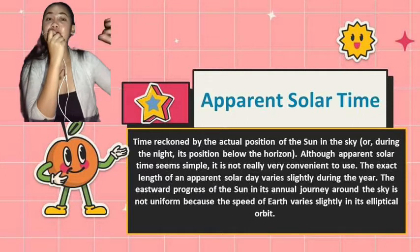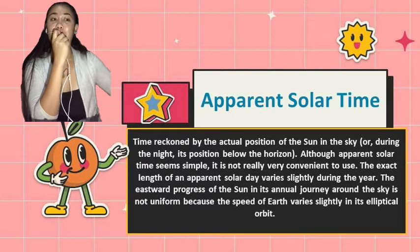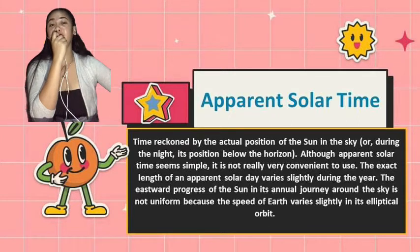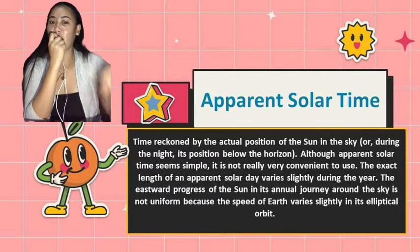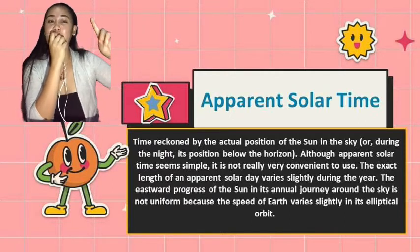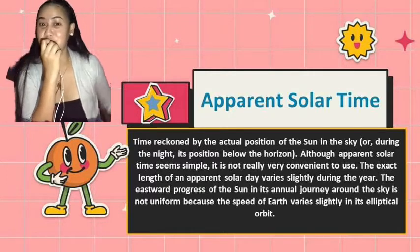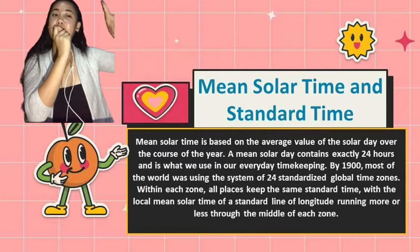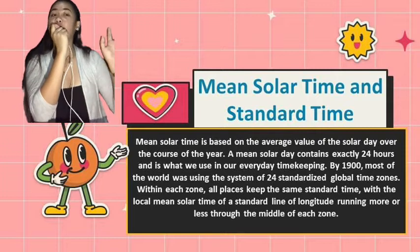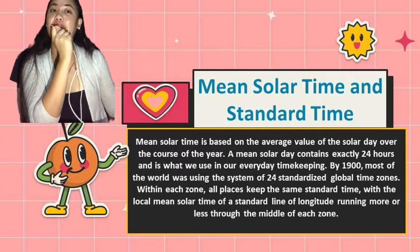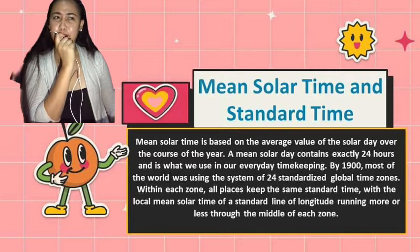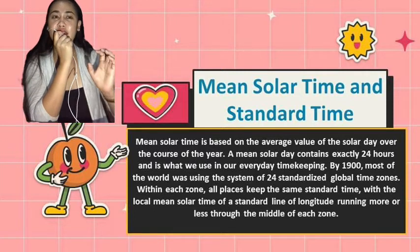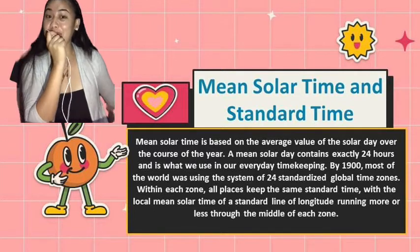After the invention of mechanical clocks that run at a uniform rate, it became necessary to abandon the apparent solar day as a fundamental unit of time. That is why apparent solar time is not convenient to use. We also have mean solar time, which is based on the average value of the solar day over the course of the year. This solar day contains exactly 24 hours and is what we use in our everyday timekeeping.